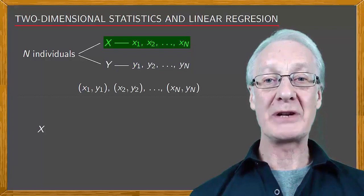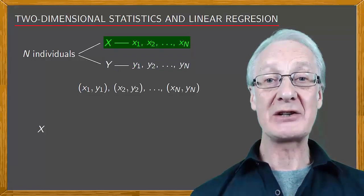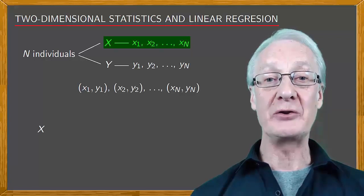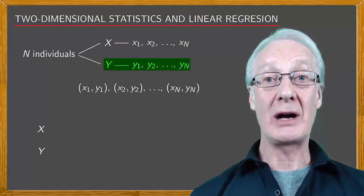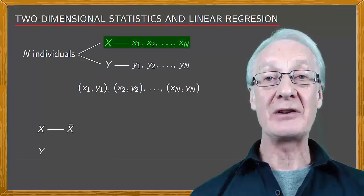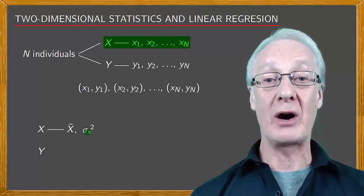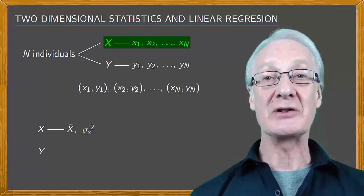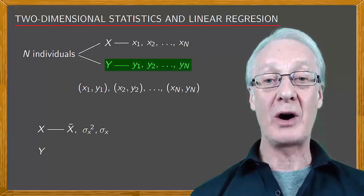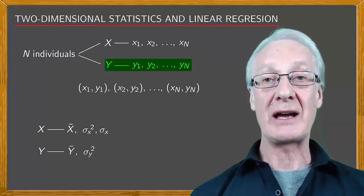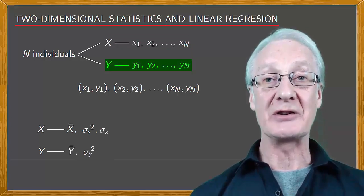For x, we'd obtain the mean and other centralisation measures, values that summarise the data set with respect to different points of view, such as the median and mode, and do the same for y. Then we'd consider the mean for x, the variance σ_x², including the subscript x to distinguish it from the variance of y, and the standard deviation σ_x. Separately, we'd do the same for y, finding the mean of y, the variance σ_y², and the standard deviation σ_y.